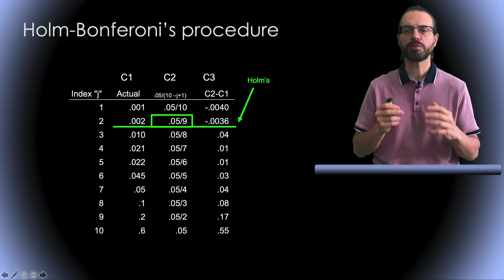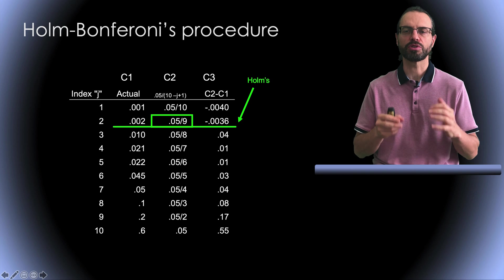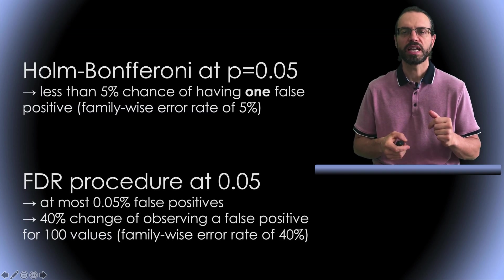Both Holm Bonferroni and Bonferroni correction accurately control the family-wise error rate.